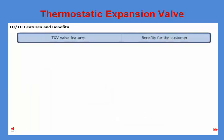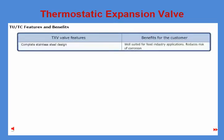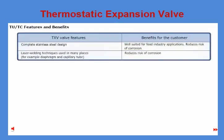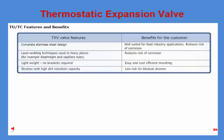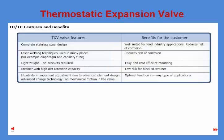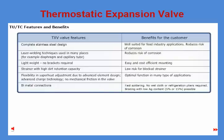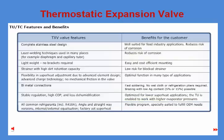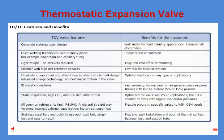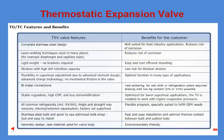General features and benefits of the TU/TC valve include: complete stainless steel design, laser welded techniques used in many places such as the diaphragm and capillary tube, lightweight with no brackets required, strainer with high dirt retention capacity, flexible superheat adjustment due to advanced element design, advanced charge technology with no mechanical friction in the valve, bi-metal connections, stable regulation with high COP and less dehumidification, compatibility with all common refrigerants including R410A, angle and straightway versions, internal or external equalization, factory set superheat, stainless steel bulb with optimized bulb strap, hermetic design, and less material for the valve body.